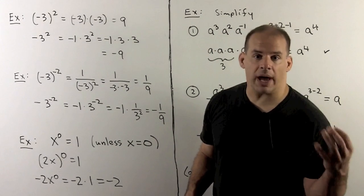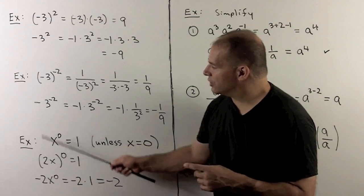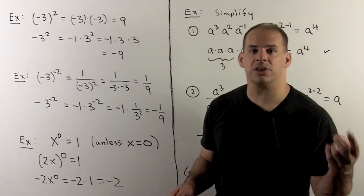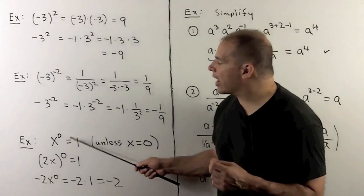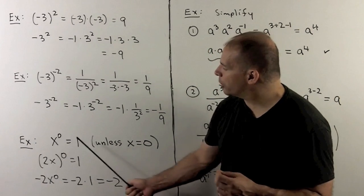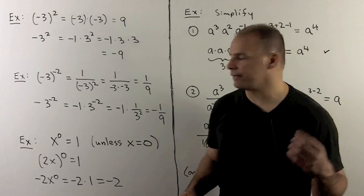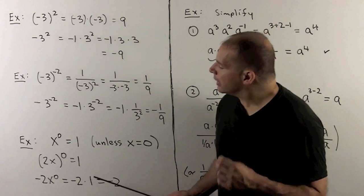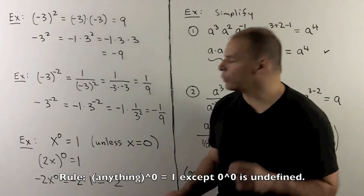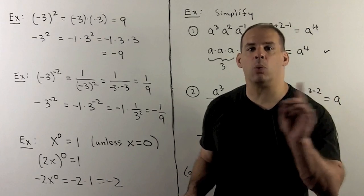Next, working with zero exponents. If I take anything to the zeroth power — except for zero — we get 1. If I take zero to the zero, it's undefined. So if I take a variable to the zeroth power, that's equal to 1, but unless our variable happens to be equal to zero. So if I had 2x in parentheses raised to the zeroth power, it's just going to be a 1 that comes out.